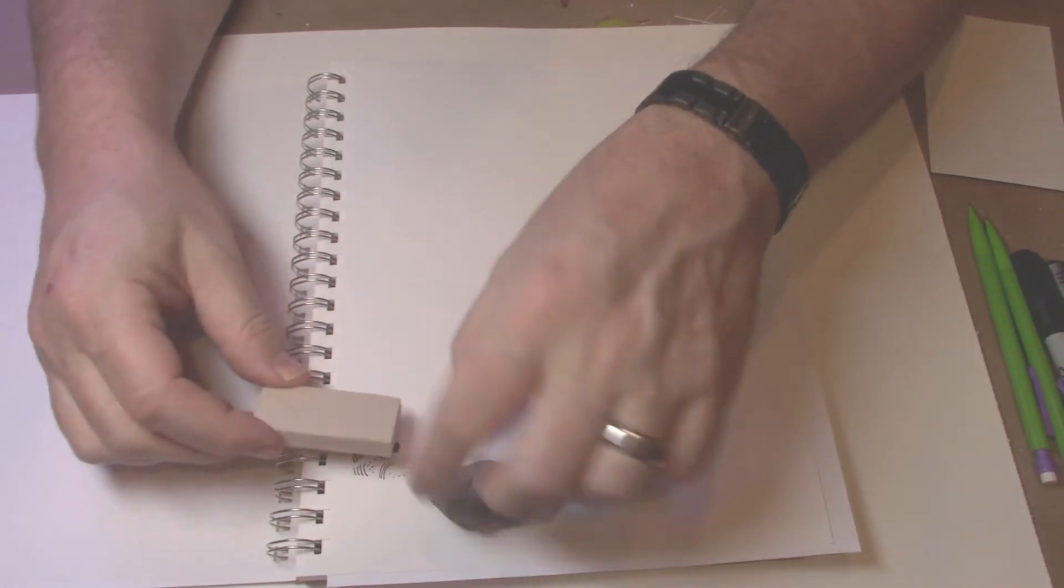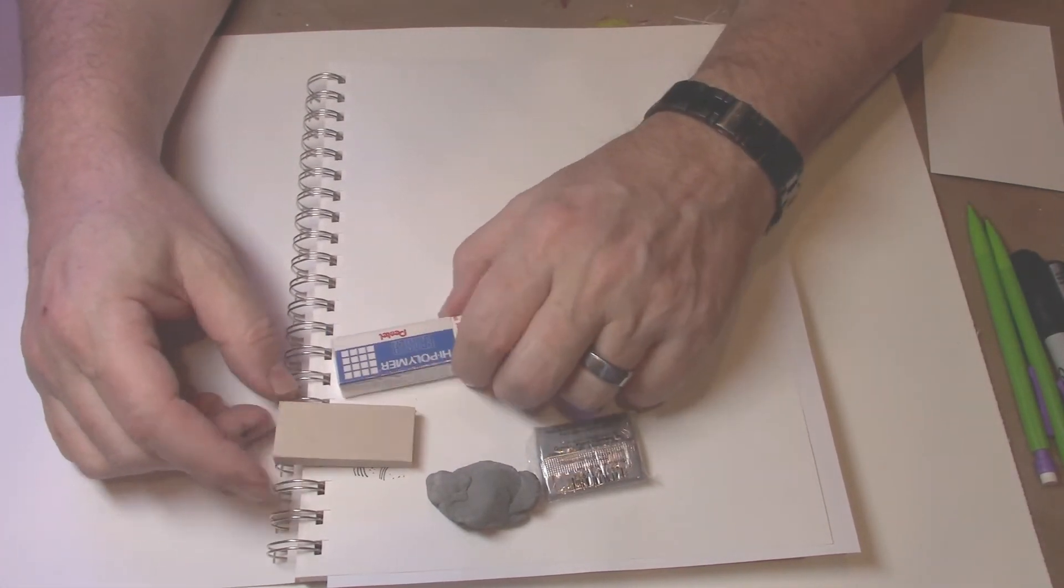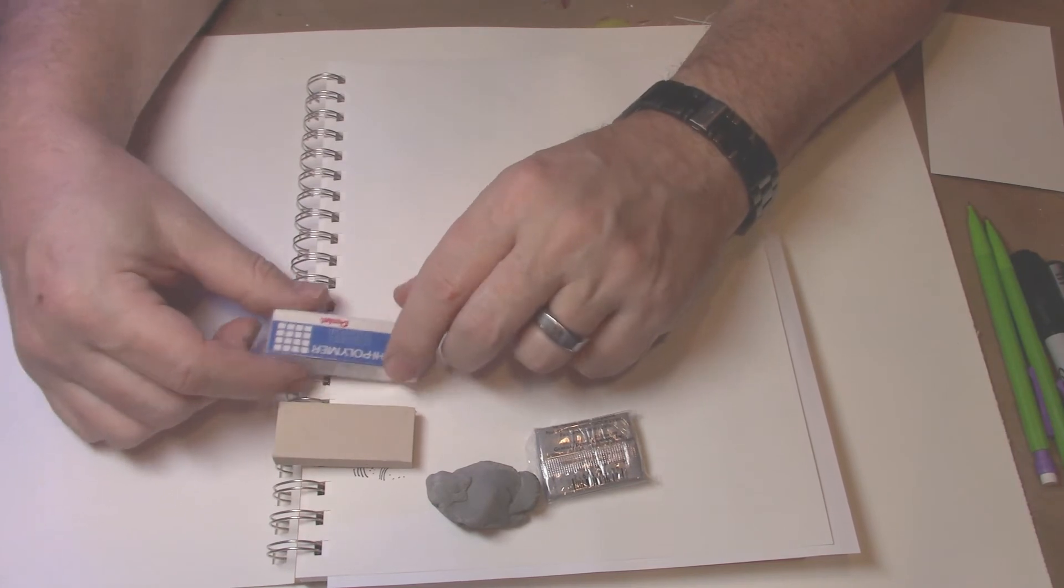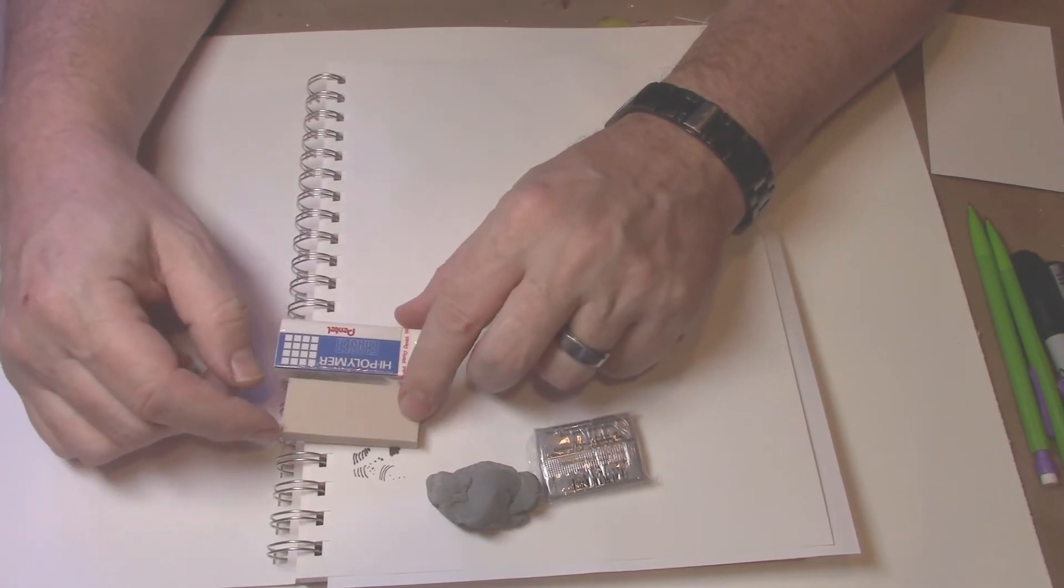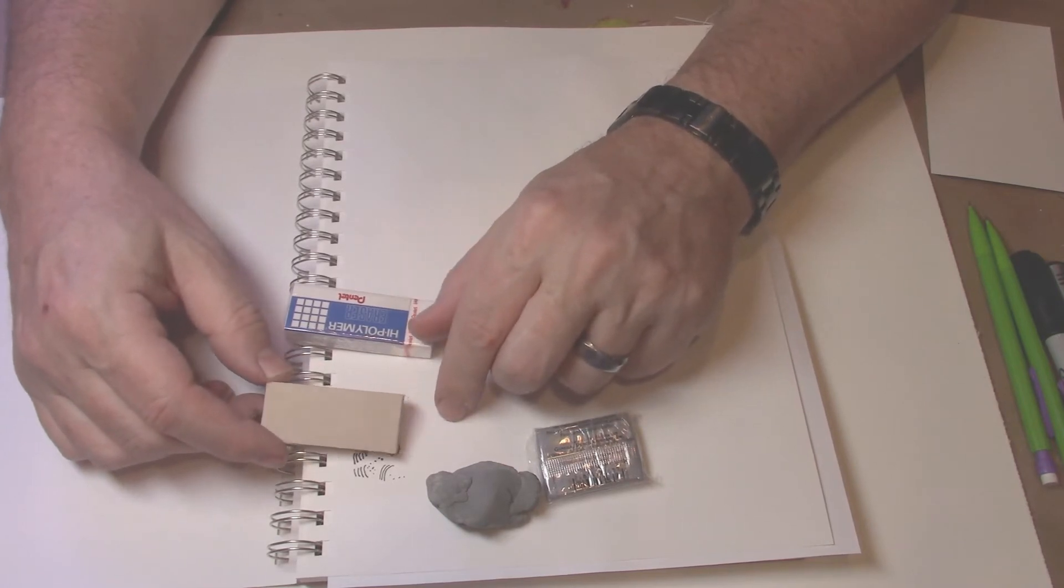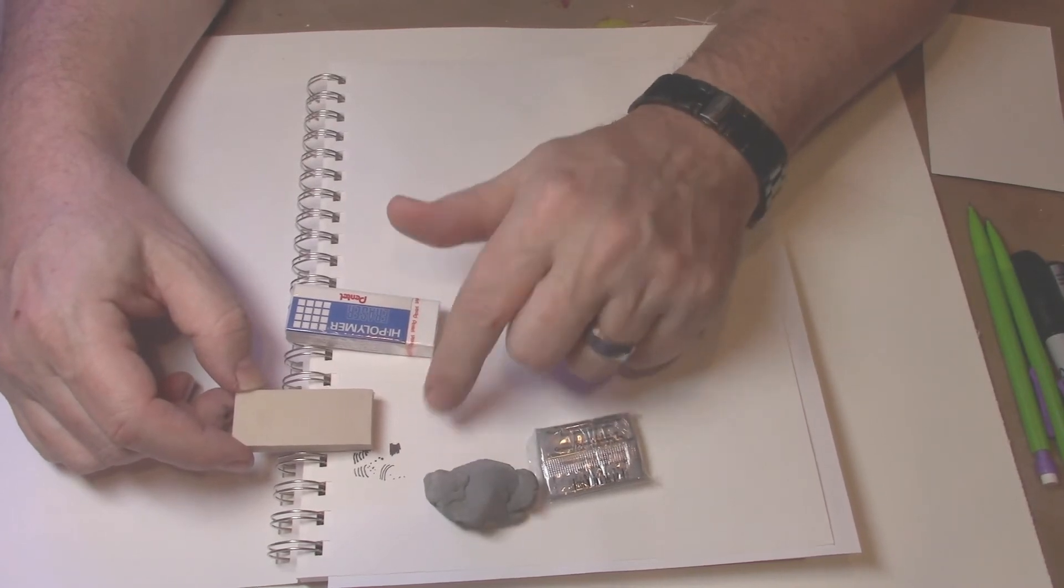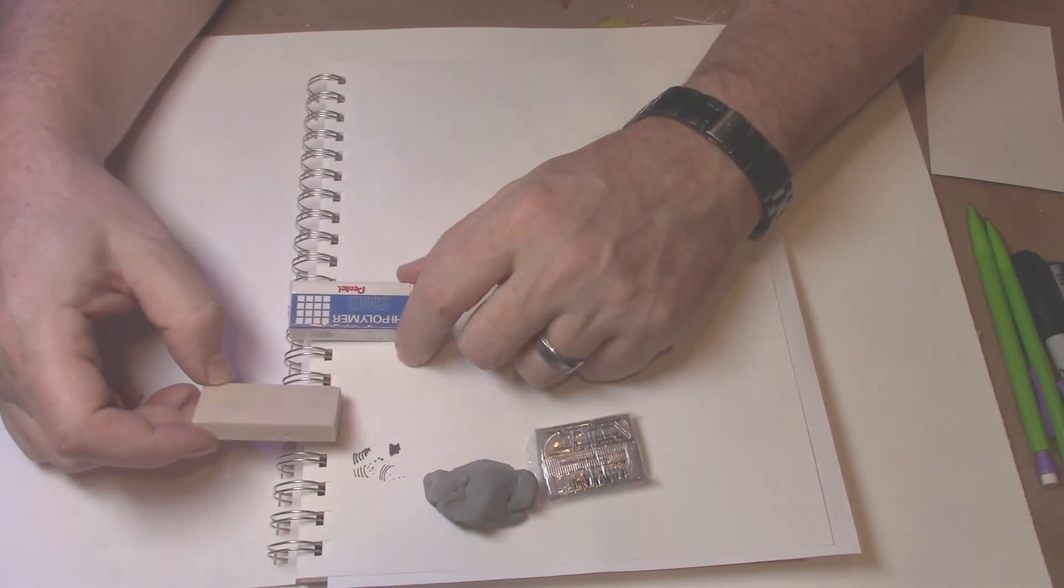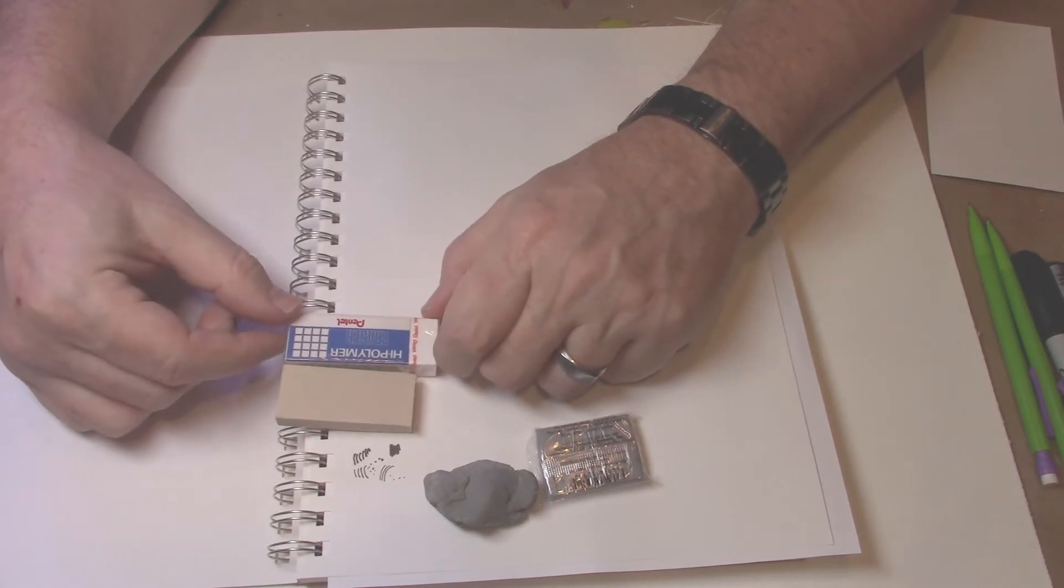And then the white erasers, the vinyl erasers, you can get them in this beige color or in the white color. Either one's fine. Try to stay away from the pink erasers. The pink erasers will sometimes stain the paper pink. They have an abrasive in there as well to lift up ink. And that will damage the fibers of the paper. So you want to stay away from those pink erasers. The beige one or the white one is fine.